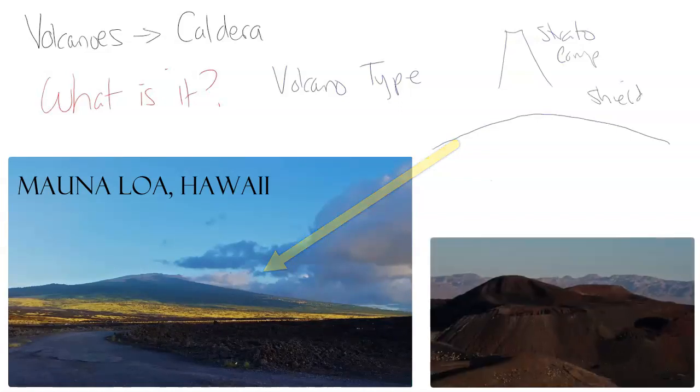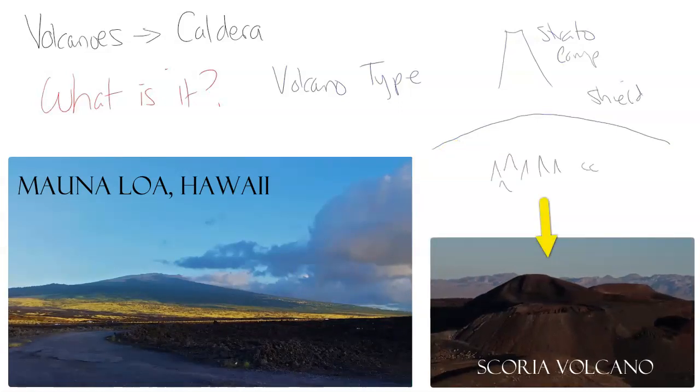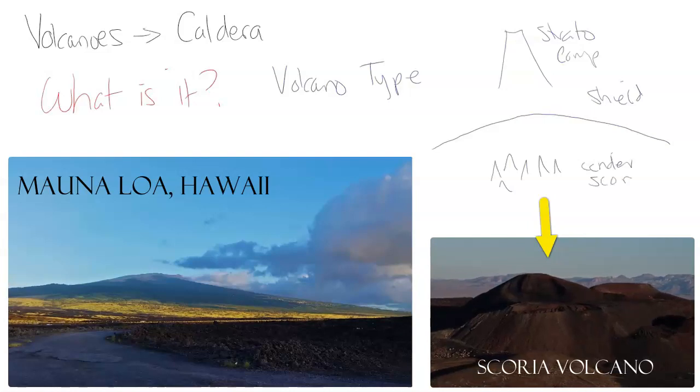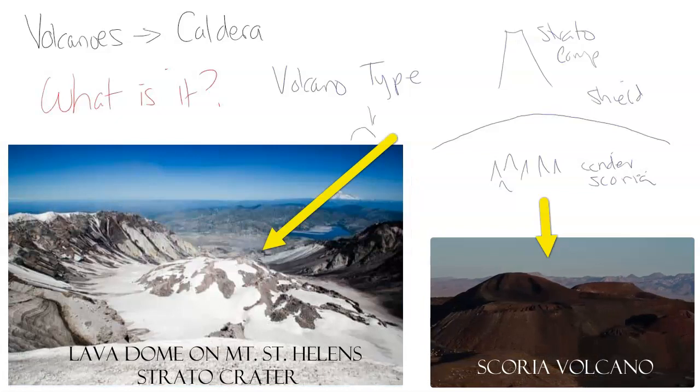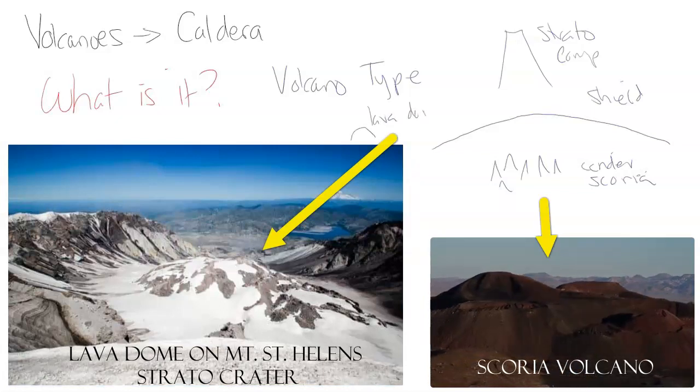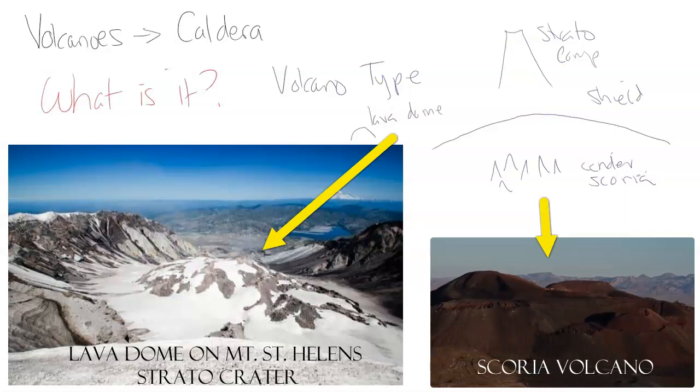We have very small but in clusters, cinder or scoria cones. We also get the lava domes, which are very small but they're very thick and viscous. We also get the parasitic cones as well and the fissures. But a caldera is something a little bit different.